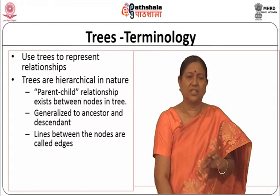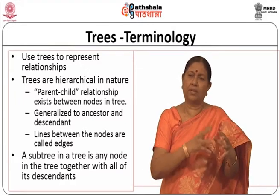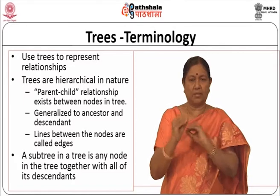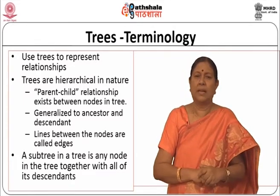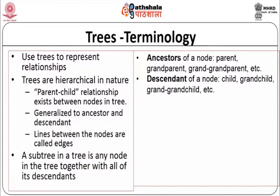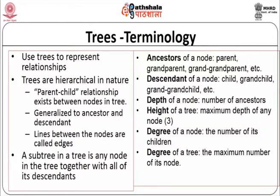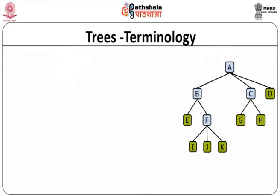The lines between the nodes are called edges. A sub-tree is a tree formed by any node of the tree together with all its descendants. Ancestors of a node are parent, grandparent, great-grandparent, and so on. Descendants of a node are grandchild, great-grandchild, and so on. Depth of a node is the number of ancestors it has. Height of a node is the maximum depth. Degree of a node is the number of its children, and degree of a tree is the maximum degree among all its nodes.